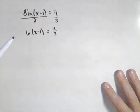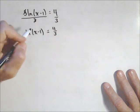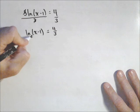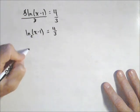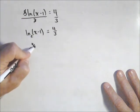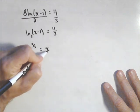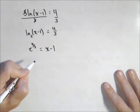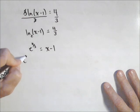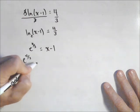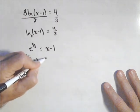Now you can, whichever way you like of thinking of it, making both sides exponents or just rewriting, doesn't matter, but remember this is a base of e now, not 10. So e to the four thirds equals x minus one. Add one to both sides, and you get e to the four thirds plus one equals x.